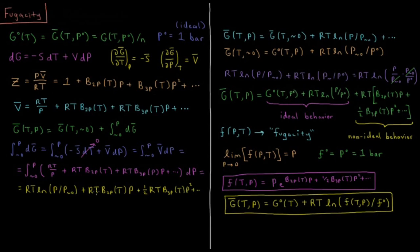For a non-ideal gas, we get that clean ideal expression plus additional terms from all the virial coefficients: RT times the quantity (second virial coefficient times P, plus one-half times the third virial coefficient times P-squared, and so on), accounting for all the non-ideal behavior. If all the virial coefficients are zero, as they are for an ideal gas, we recover the ideal gas expression.